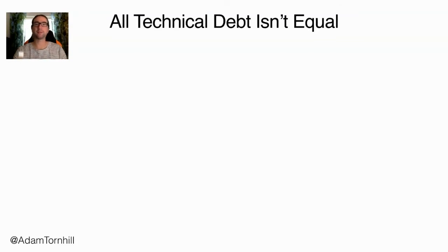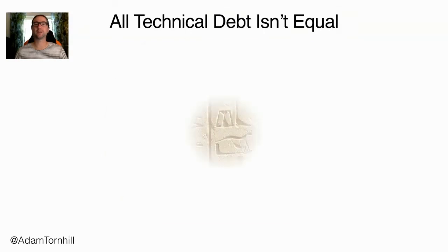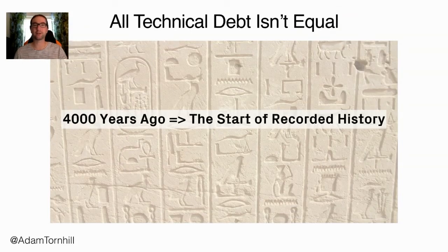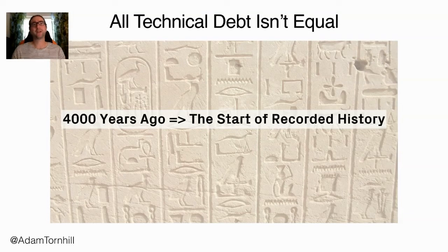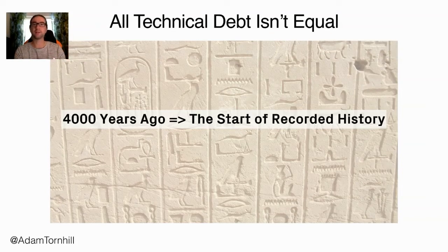In this organization, they had thrown one such tool at their 15-year-old codebase, and the tool reported 4,000 years of technical debt. Just to put that into perspective: 4,000 years ago is the start of recorded history via the invention of writing. Jokes aside, I think 4,000 years of technical debt on a 15-year-old codebase — even accounting for hundreds of developers working in parallel — how useful is it to know? It's depressing, but how do you act upon it? Is all debt equally important?